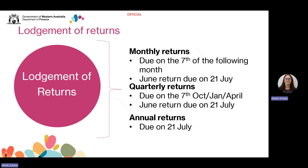If you are a quarterly lodger in Western Australia only, you must lodge by the 7th of October, January and April, and by the 21st of July for the June quarter and the annual reconciliation. Annual lodgers must complete an annual return and their annual reconciliation by the 21st of July. Reconciliation is completed by Revenue WA on your behalf.